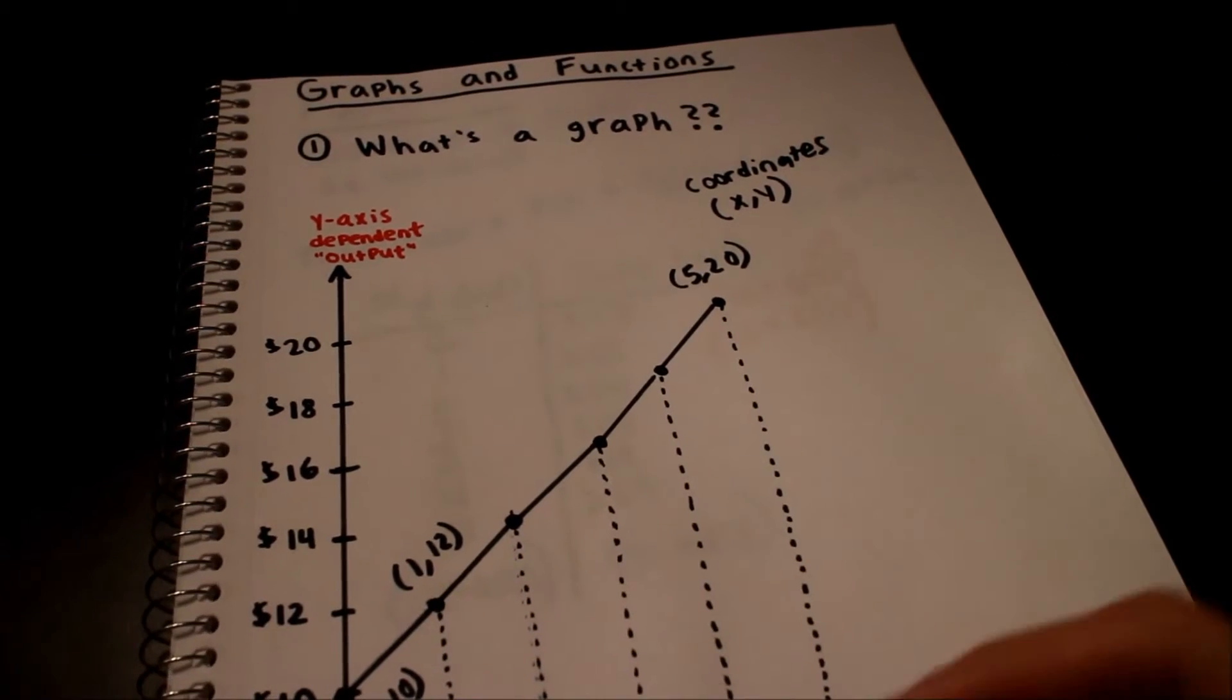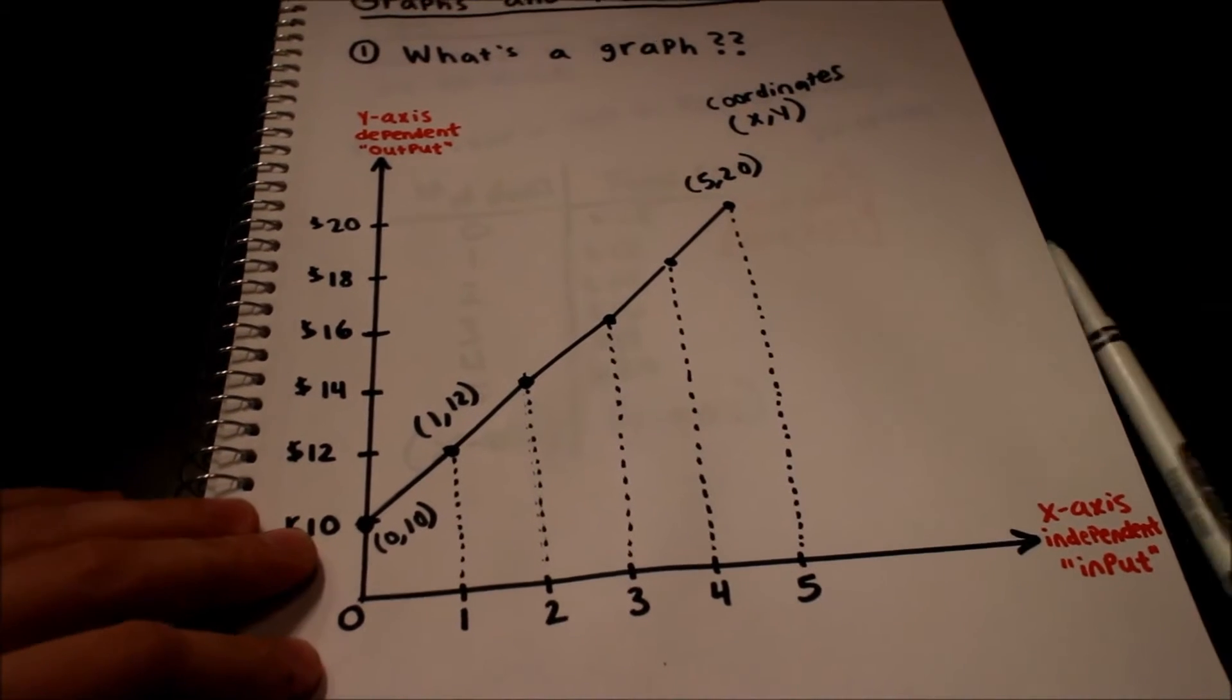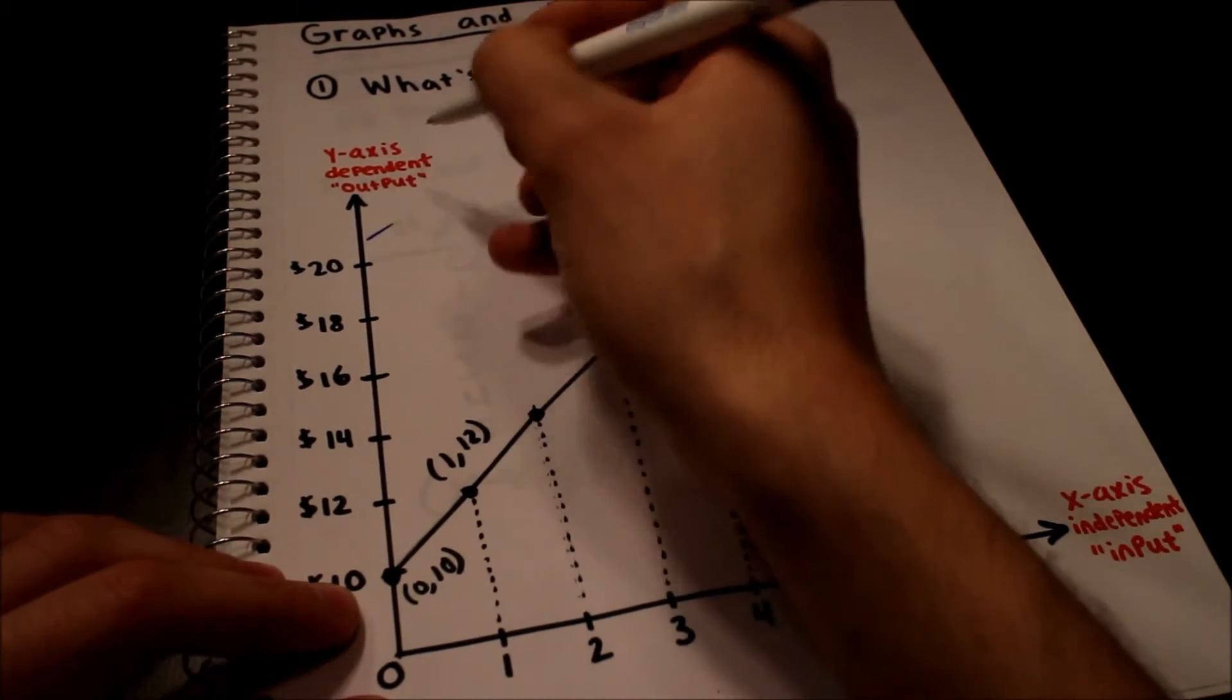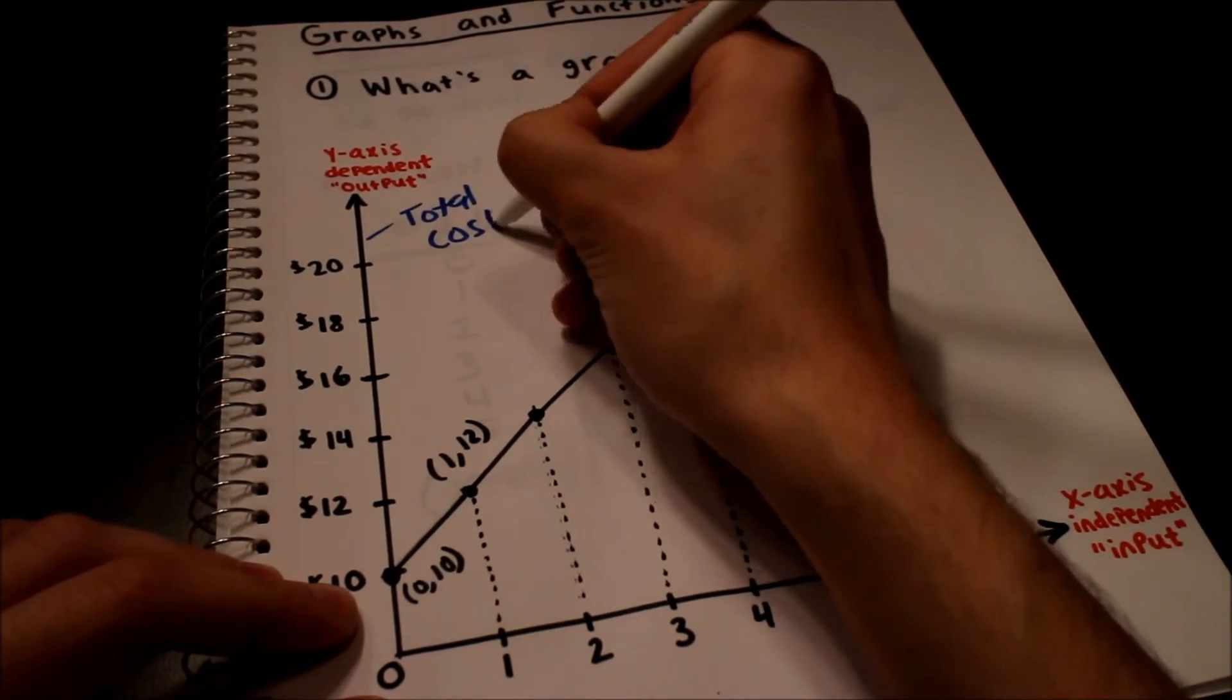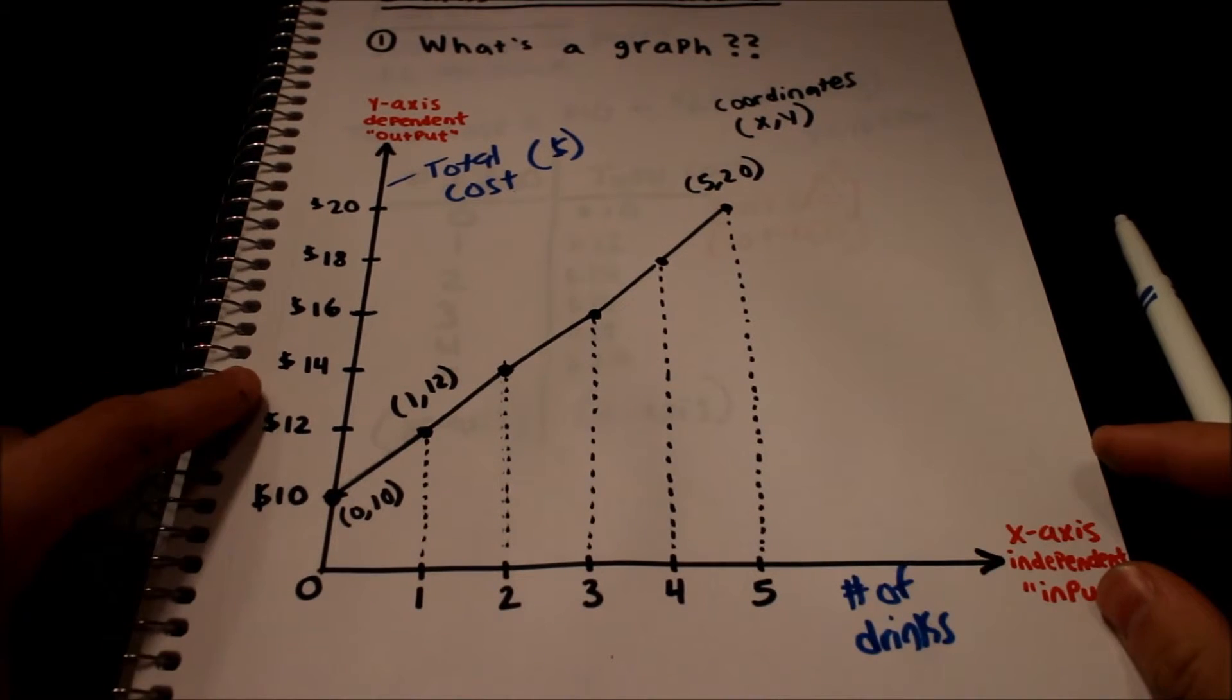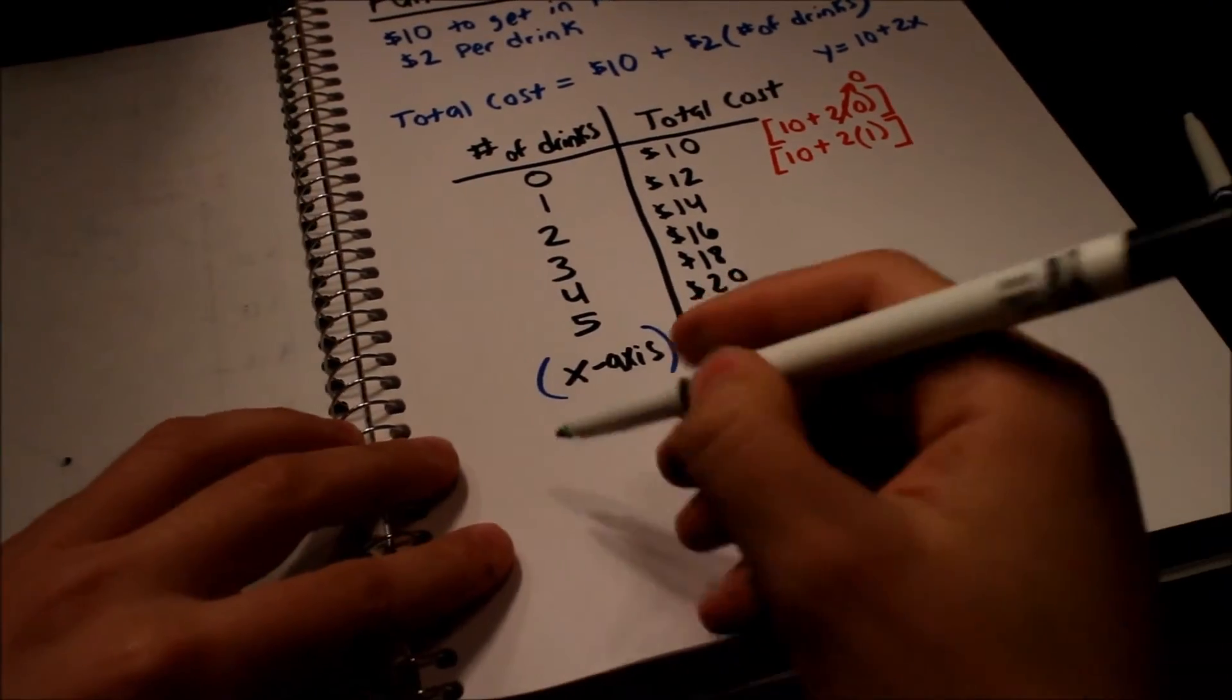So looking at the graph, we just represented that. See zero? Sorry, you can't see that. Zero, our input, if we input zero drinks - so let me also write that down. This is the number of drinks. And that's in dollars of the party. So see, it's a nice way to kind of reference what our total cost is going to be. It kind of computes it for us. You just look at the graph and you just reference over and it's just a lot quicker. So that's what a function is.